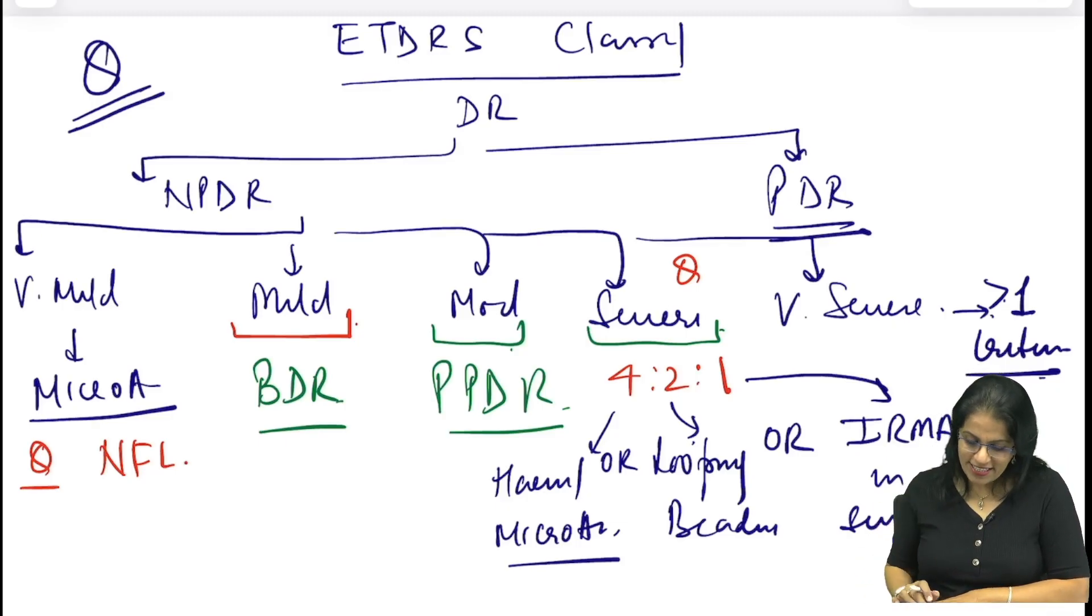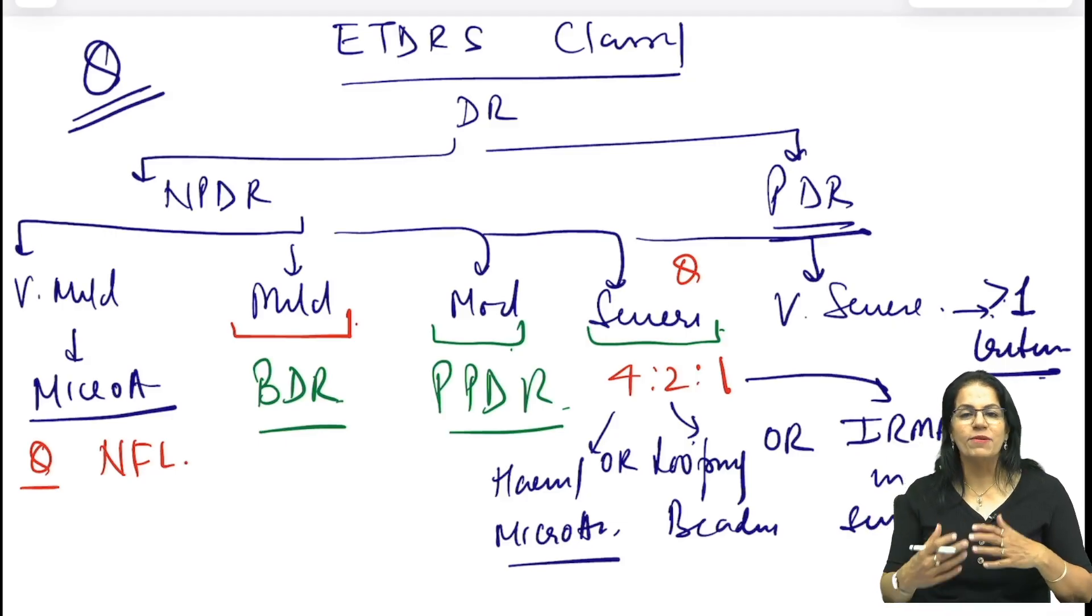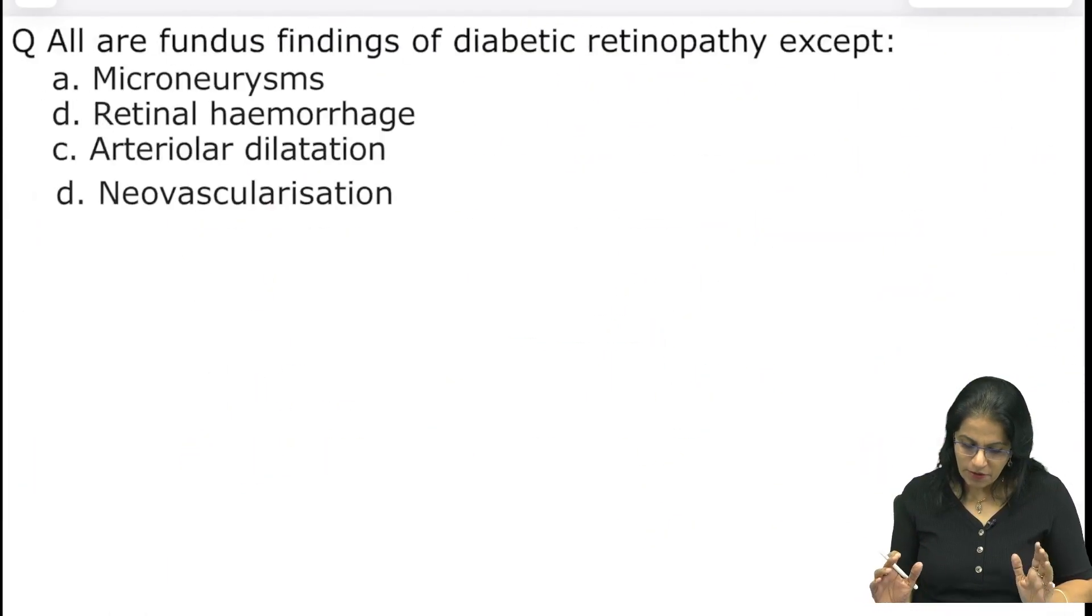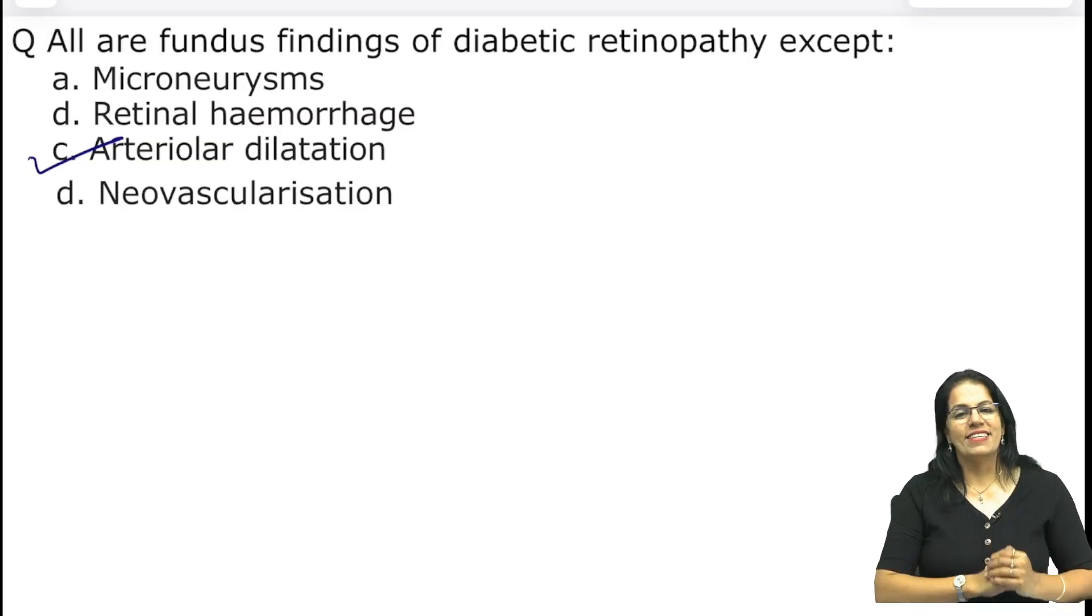Now this is the question discussed. So jitne bhi we are our sessions it has to be very quick, bohot jaldi, bohot crisp hona hota hai isliye maine itne quickly jitni baate bata sakte hu batane hi koshish ki hai. Aap dekho ye question solve karte hai. All are fundus findings of diabetic retinopathy except - asaan, microaneurysms, retinal hemorrhage, arteriolar dilatation, neovascularization. Except me kya aega? Arteriolar dilatation right. So ye jitne bhi main A to Z series bata rahi hu jo topics discuss kar rahi hu, matlab ye bohot important topic hai aapko achche se padhna hai. Okay. Thank you so much, hope you enjoyed the session, stay blessed and keep smiling.